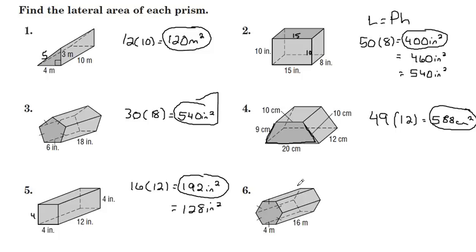And then number six, we have a regular hexagonal prism, with each side being 4. 4 times 6 gives us 24. Multiplied by the height of 16, and we have 384 meters squared. And there we are.